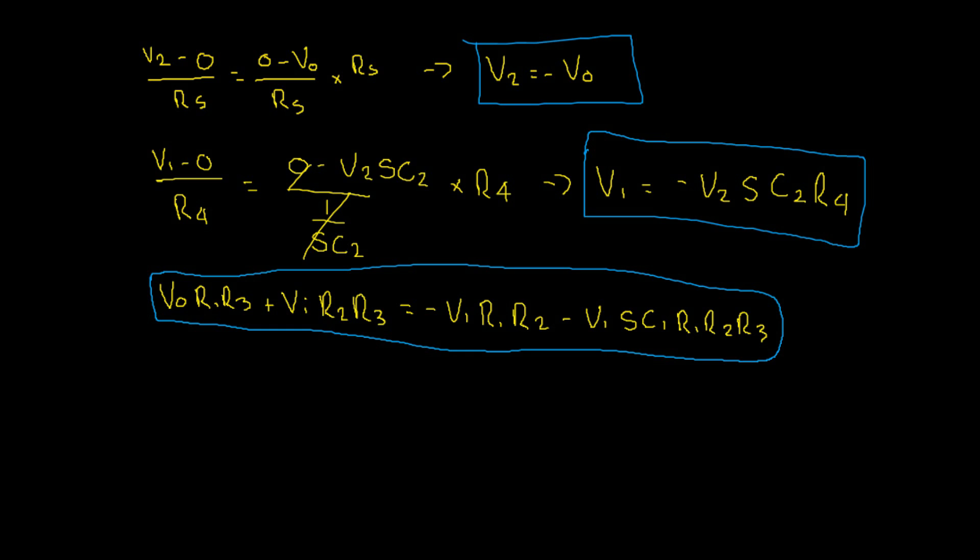Let's do that now. Let's substitute V2 equals negative VO into our equation for V1. This gives us V1 equals VO SC2 R4. Then, we can substitute our equation for V1 into our final equation and then rearrange for VO divided by VI.